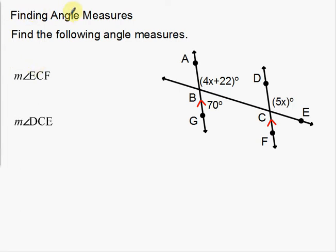In this video I'm going to talk about finding angle measures. I'm going to go over a couple of examples of how to find angle measurements using the theorems and postulates we've gone over — specifically, corresponding angles, alternate interior angles, alternate exterior angles, and also same side interior angles.